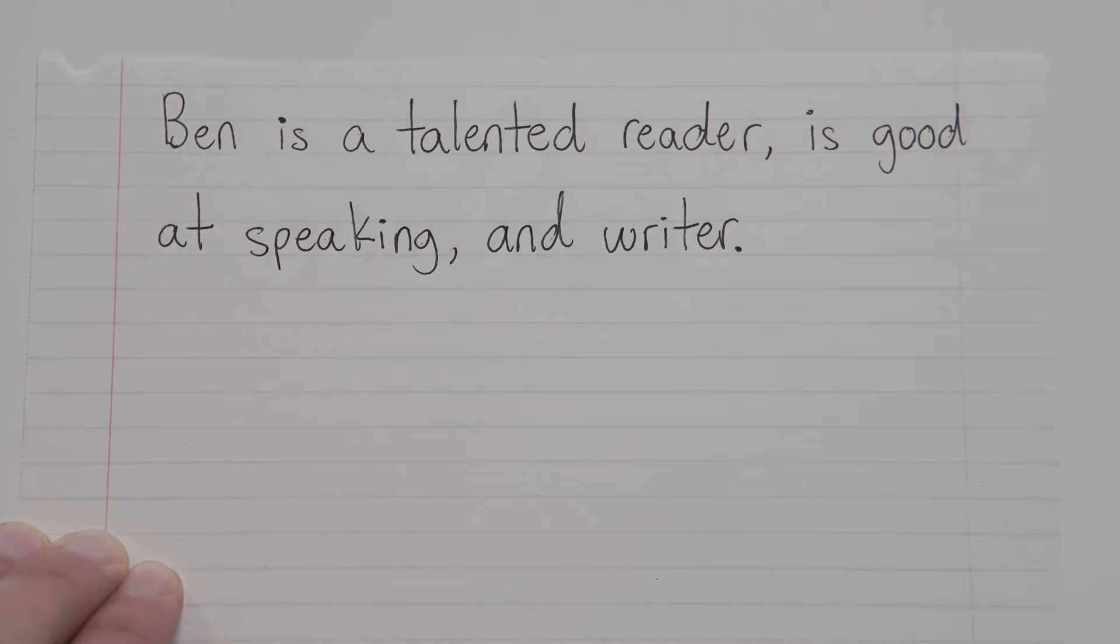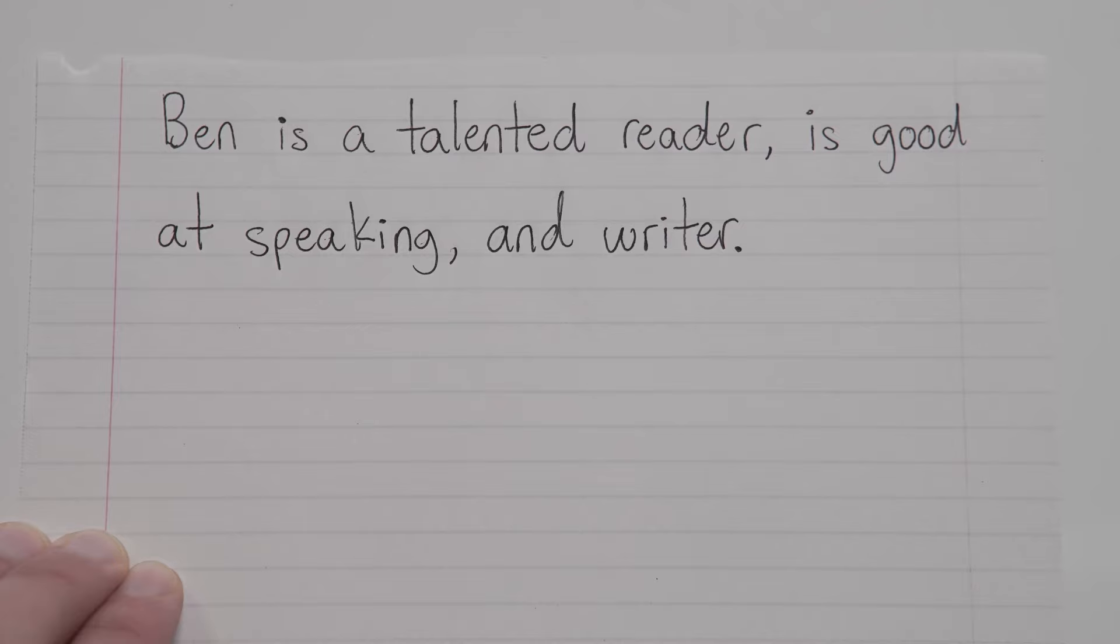Next one. Ben is a talented singer, is good at speaking, and writer. Okay, so once again, what things should be parallel here? Answer is, reader, is good at speaking, and writer. Now, of those three things, which ones are already parallel?